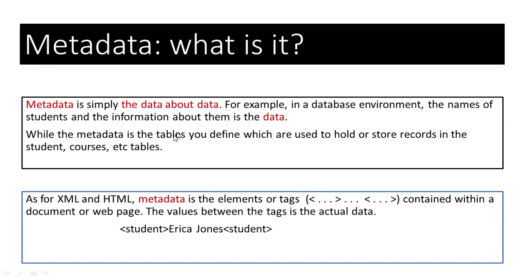Metadata is simply the data about data. In a database environment, the names of students and information about them is the data, while the metadata is the tables you define to hold records. As for XML and HTML, metadata is the elements or tags contained within a document or web page, while the values between the tags is the actual data. For example: <student>Erika Jones</student> — the XML metadata is the 'student' tag, while 'Erika Jones' is the actual data.